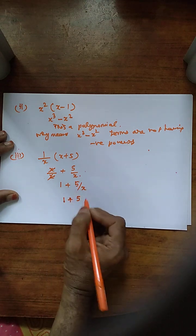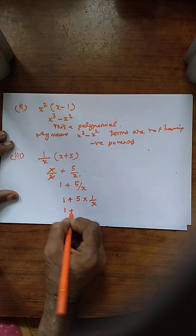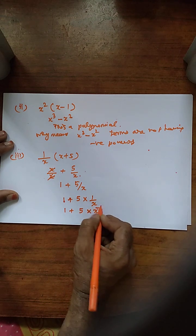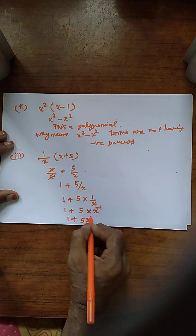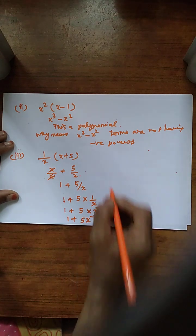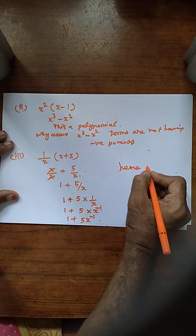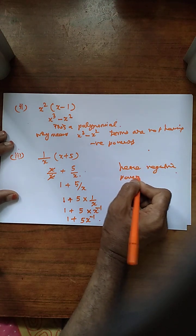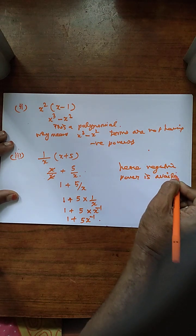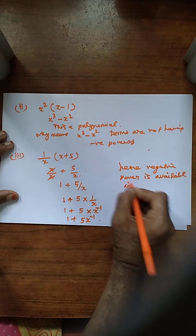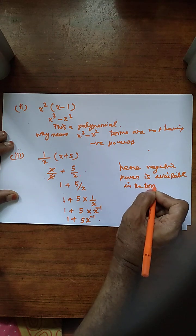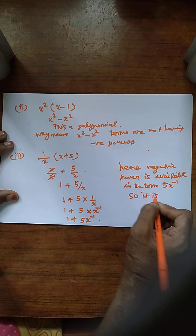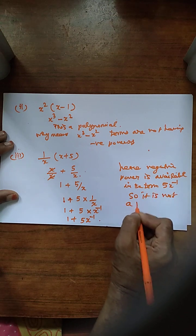It should be written as 1 plus 5 into x power minus 1. So 1 plus 5x to the power minus 1. Here negative power is available in the term 5x to the power minus 1, so it is not a polynomial.